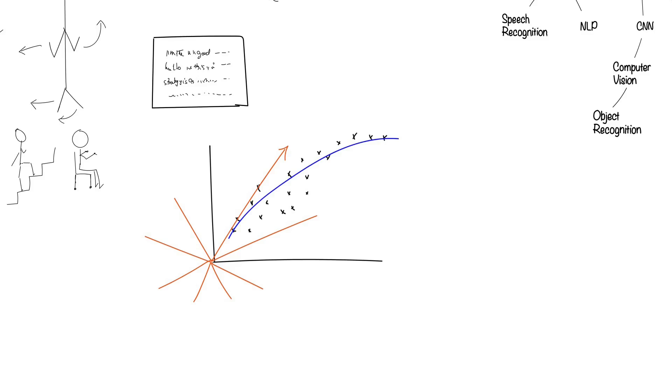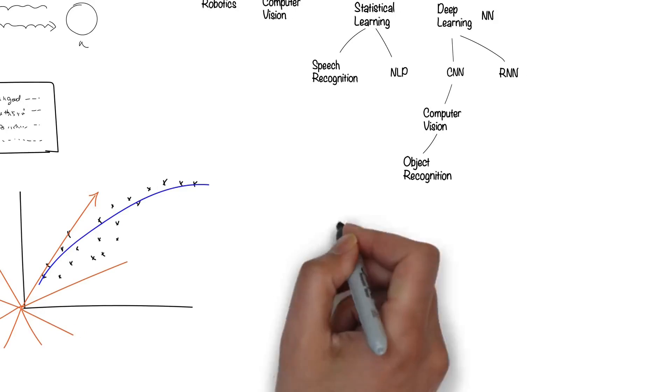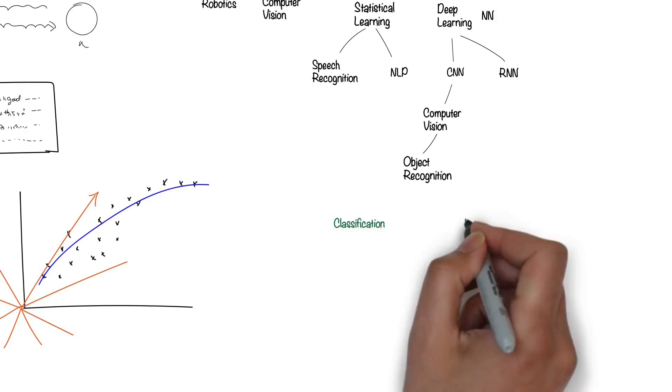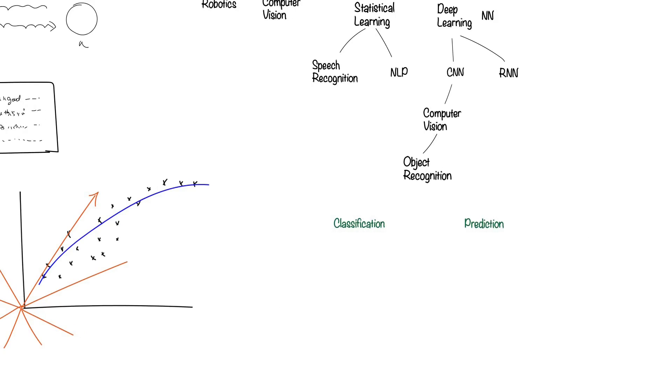Once it learns these patterns, it can make predictions that humans can't even come close to. We can use all these machine learning techniques to do one of two things, classification or prediction.